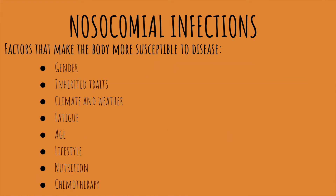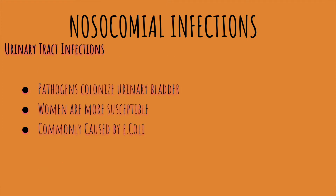Factors that can make a person more susceptible to disease include gender — for example, women are more susceptible to urinary tract infections — as well as inherited traits such as the sickle cell gene, climate and weather, fatigue, and age. Toddlers and elderly individuals are more susceptible because a toddler's thymus isn't fully developed and an elderly person's thymus deteriorates, reducing their ability to produce T cells. Lifestyle, nutrition, and chemotherapy are also contributing factors.